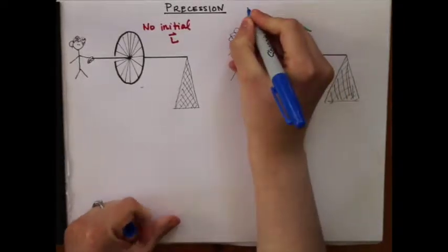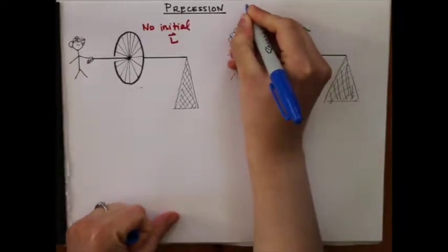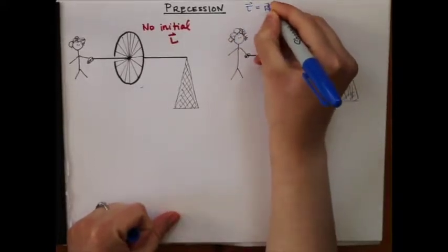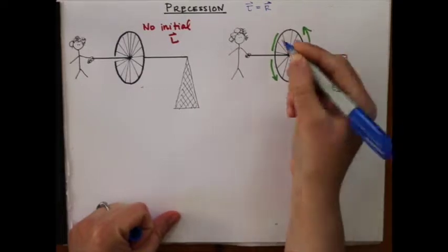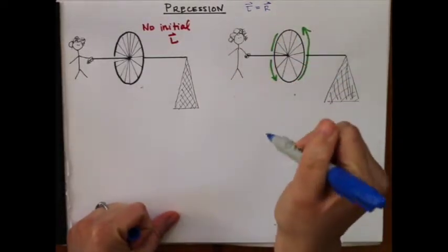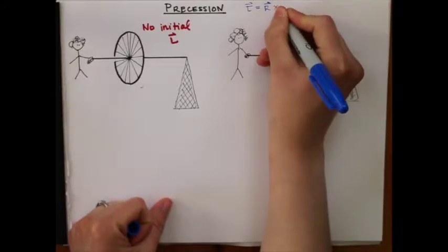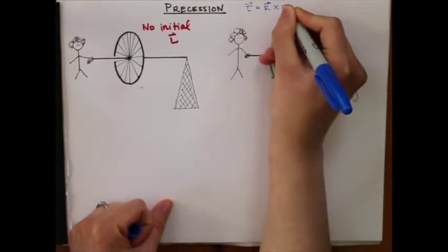We need to know that the torque due to a force is equal to the vector from the pivot point to the point of application of the force crossed with the force.